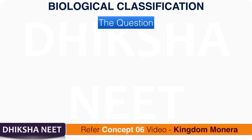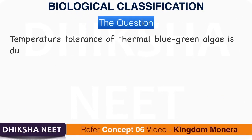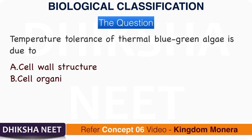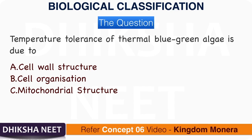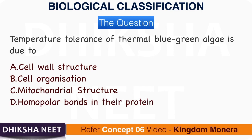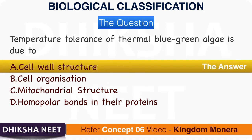Question 13: Temperature tolerance of thermal blue-green algae is due to: A. Cell wall structure. B. Cell organization. C. Mitochondrial structure. D. Homopolar bonds in their proteins. The answer is option A, cell wall structure.